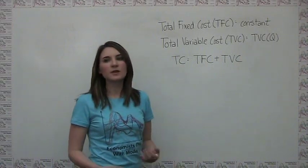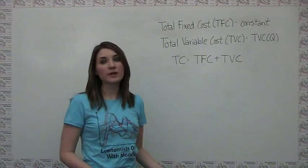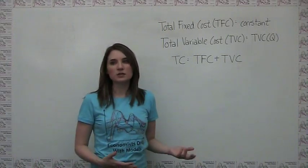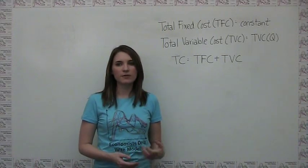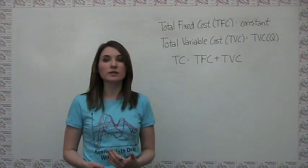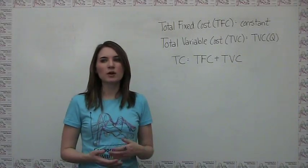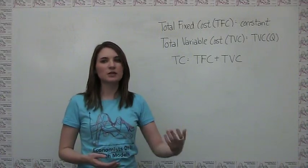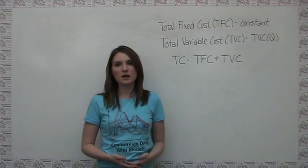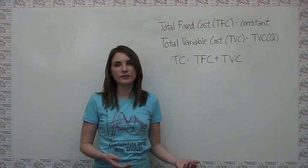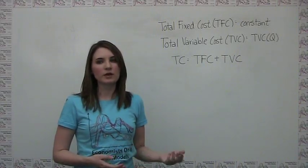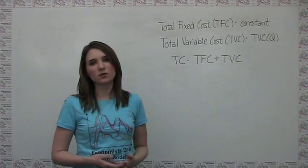In practice, fixed costs are often not truly fixed over all levels of production. Even in the example just used, it's easy to see how a firm would need more office space if it was producing higher quantities of output, but it's not the case that more office space would be needed for each incremental unit of output. Therefore, it still makes more sense to think of it as a fixed cost than as a variable cost. In general, some judgment is needed in order to determine whether a cost should be identified as fixed or variable.